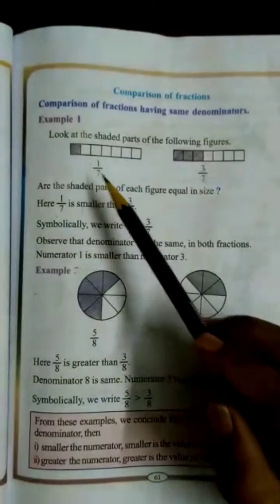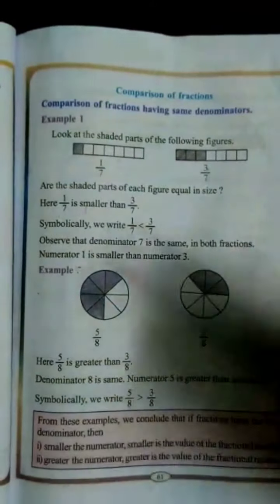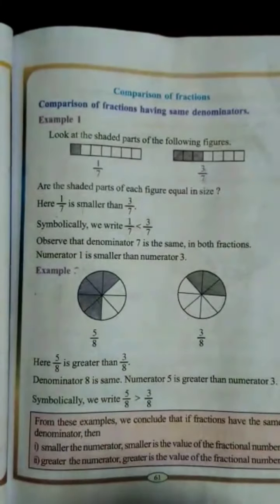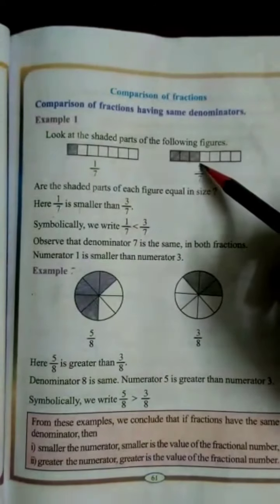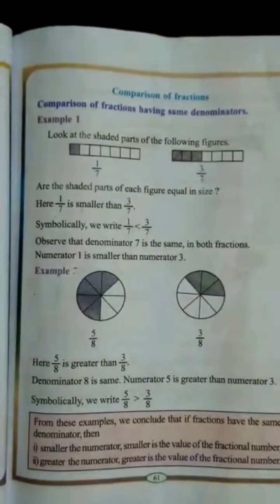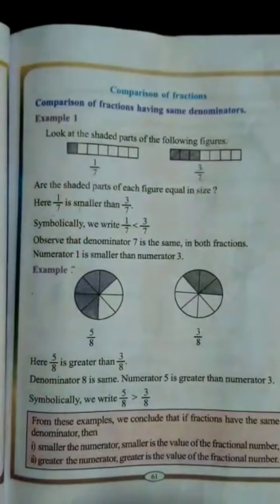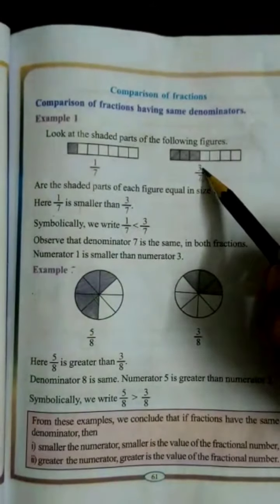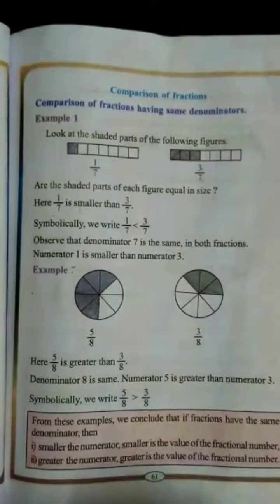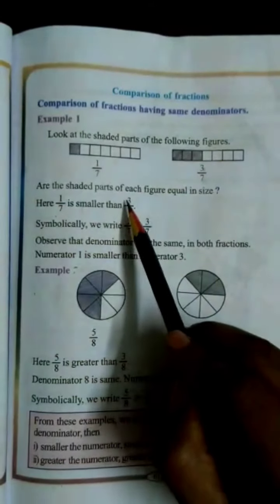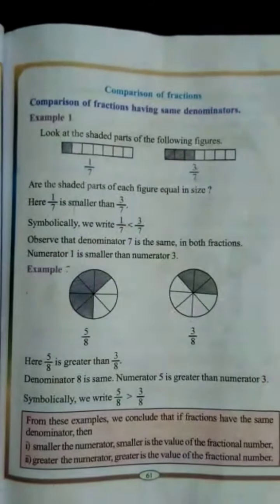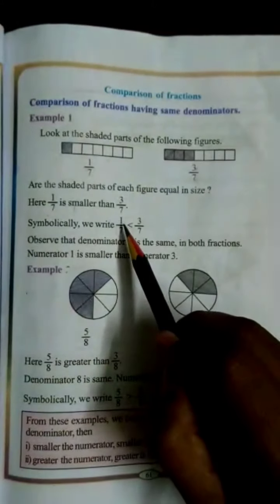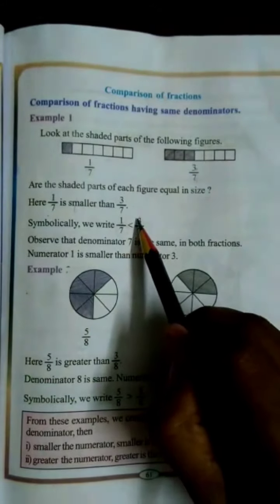In the first figure, only one part is shaded. In the second figure, three parts are shaded. So we can see that the greater numerator gives the greater value of the fractional number, because in the second figure more parts — three parts — are shaded. Therefore, 1 by 7 is smaller than 3 by 7. We write this symbolically as 1/7 < 3/7.